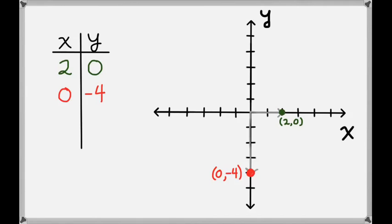So when the y-value is 0, as in the case of (2, 0), the point is right on the x-axis. And when the x-value is 0, as in the point (0, -4), the point is right on the y-axis.